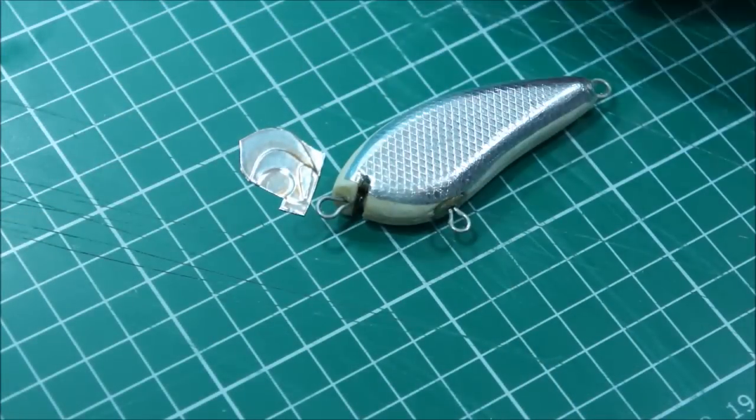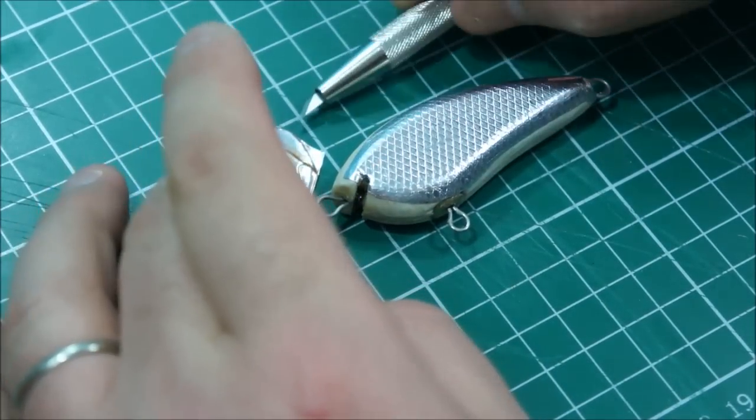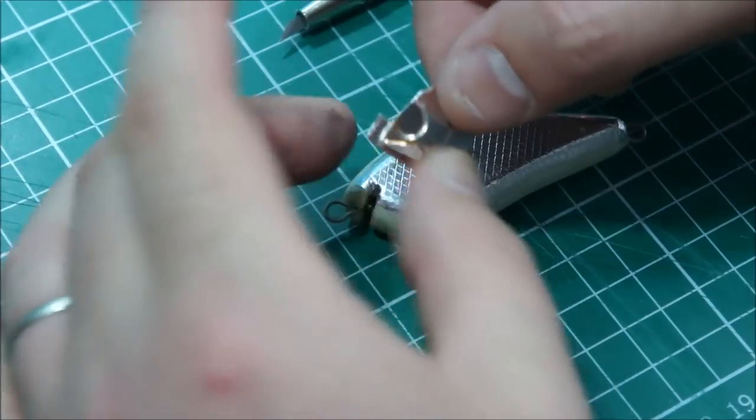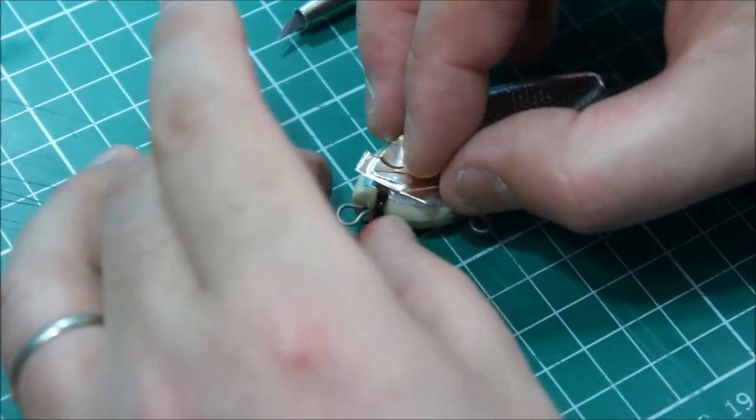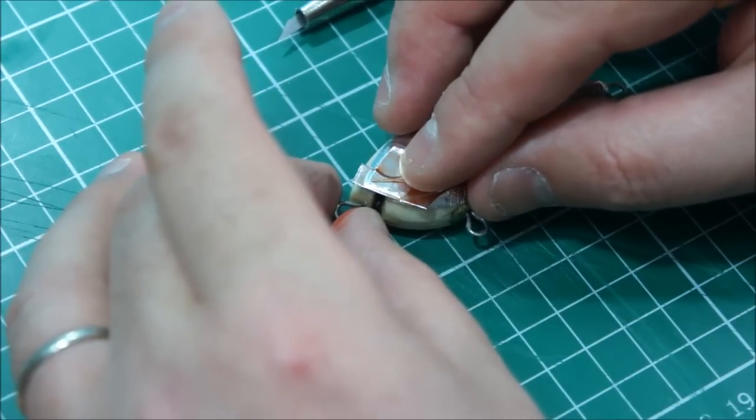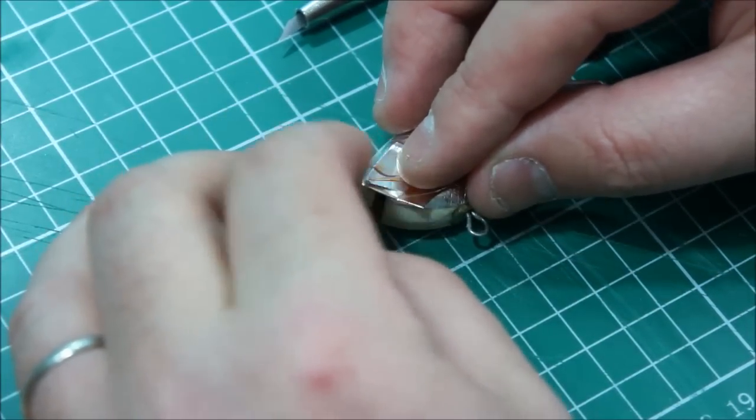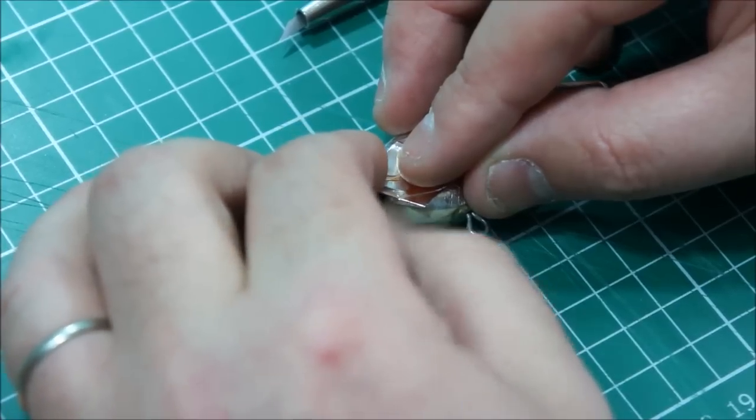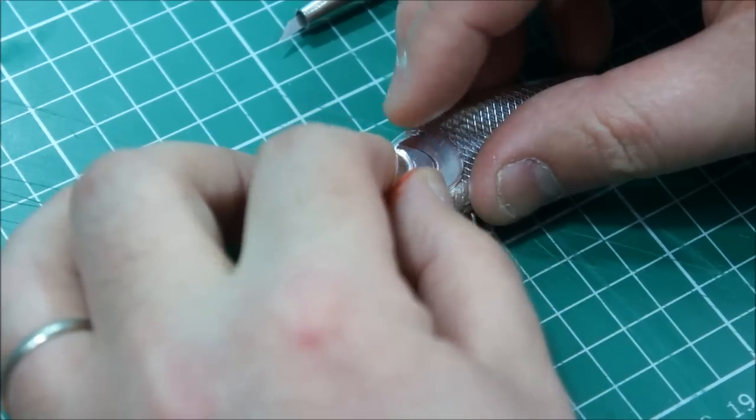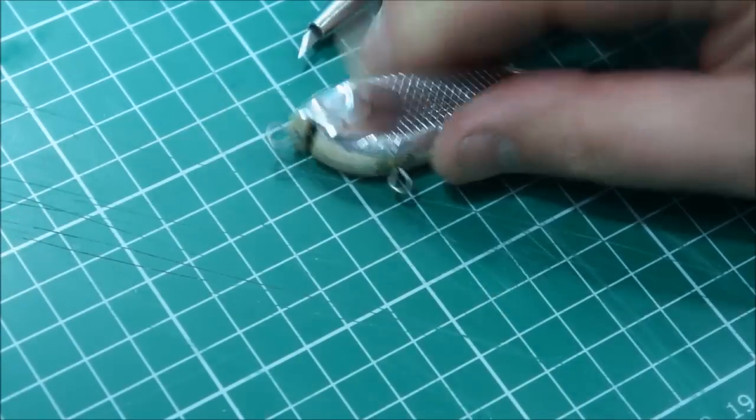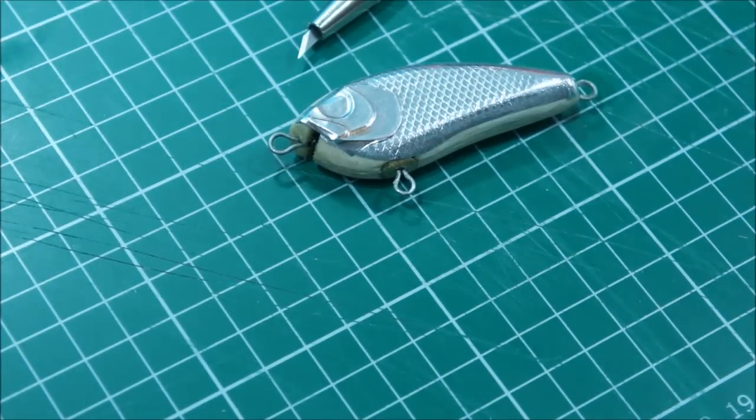To attach it to the lure, it's a case of sticking it on. I'm going to kind of line it up, then just push the tabs down. There we go. So I'm going to repeat that for the other side.